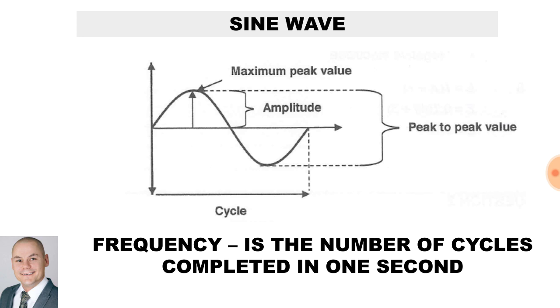Looking at this generated sine wave, we can see our peak-to-peak, our amplitude, and our maximum value. Now, the period or time is the time taken to complete one cycle. However, when defining frequency, it is the number of cycles completed in one second.